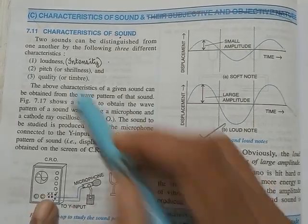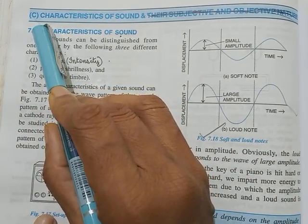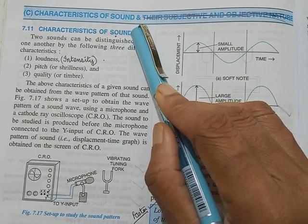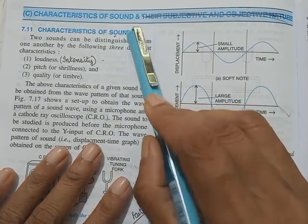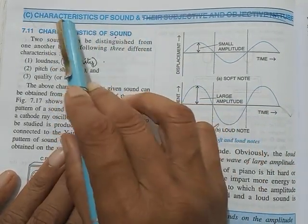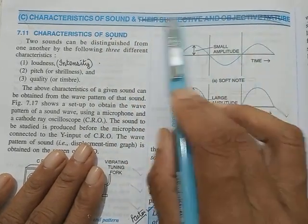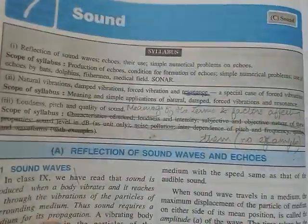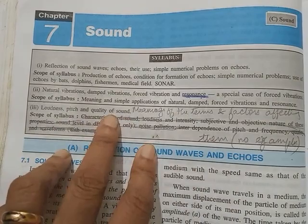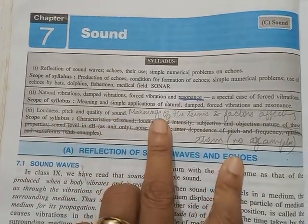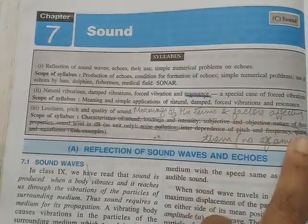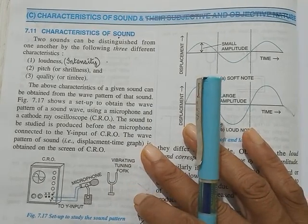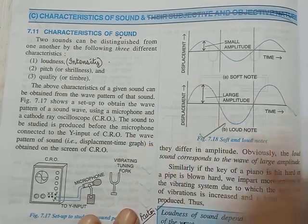Hello children, we have to do the C part of the sound chapter - characteristics of sound. The reduced syllabus has come but not much is reduced. This C part - subjective and objective nature - is cut off. If you turn to page 148, loudness, pitch and quality are there, but they have cut off everything and just written meaning of the terms and factors affecting them. No examples, so we'll be quickly doing it today.